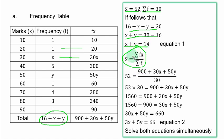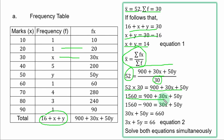Solving simultaneously: multiply equation 1 by 5: 5x + 5y = 70 (equation 3). Subtract equation 2 from equation 3: 5x - 3x = 70 - 66, so 2x = 4, giving x = 2. Substituting x = 2 into equation 1: 2 + y = 14, so y = 12. Therefore x = 2 and y = 12.